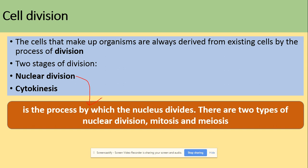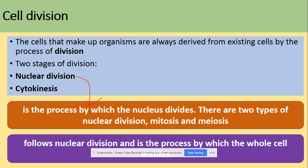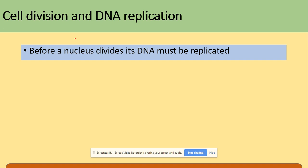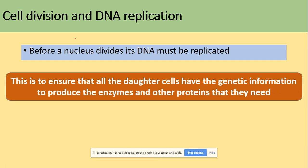There are two types of nuclear division: mitosis and meiosis. It follows nuclear division, which is the process by which the whole cell will divide. But before mitosis or meiosis can take place, the DNA has to be replicated.